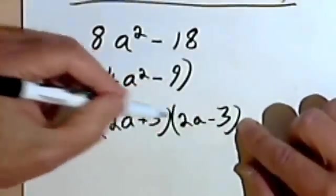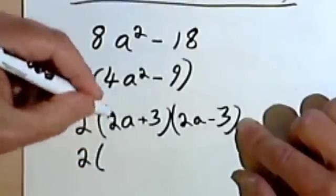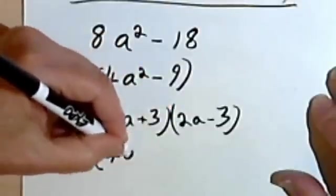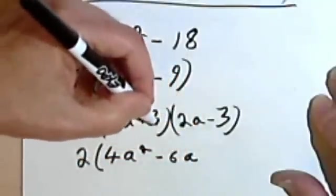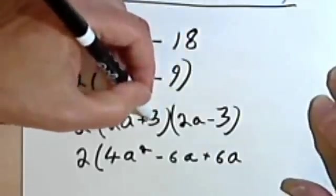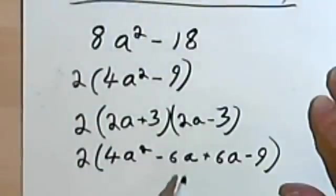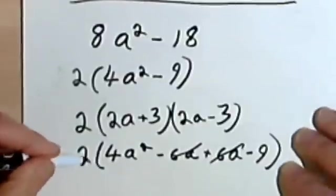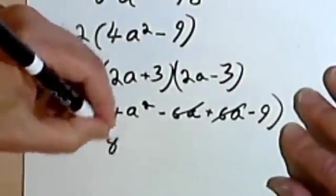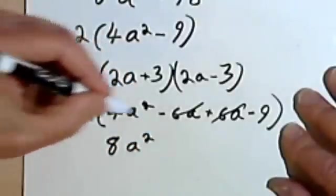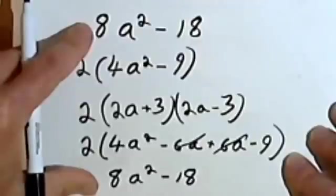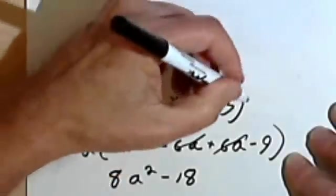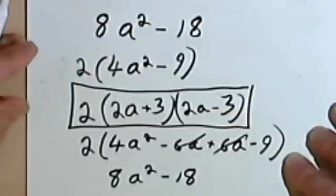Checking it, I'll multiply these two binomials together first. I have to keep my 2. So 2a times 2a is 4a squared. 2a times negative 3 is negative 6a. 3 times 2a is positive 6a. And 3 times negative 3 is negative 9. I can cross out these two because they cancel each other, negative 6a and positive 6a. And now distributing my 2, I get 8a squared. 2 times negative 9 is negative 18. And that's exactly the same problem I began with. So this factorization is going to work.